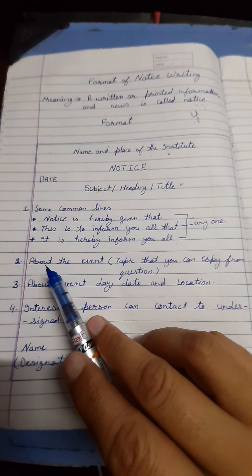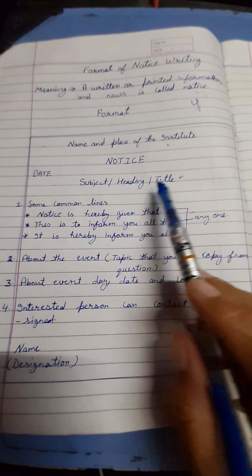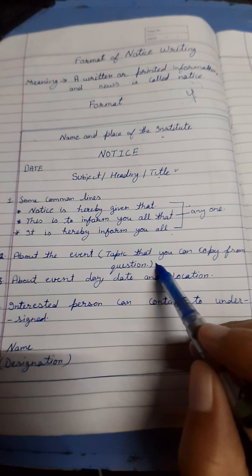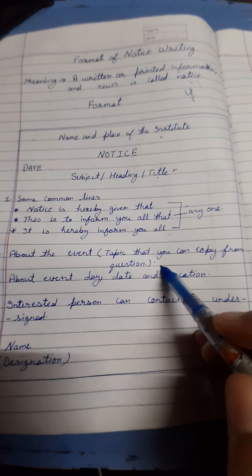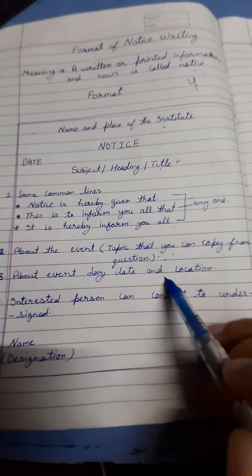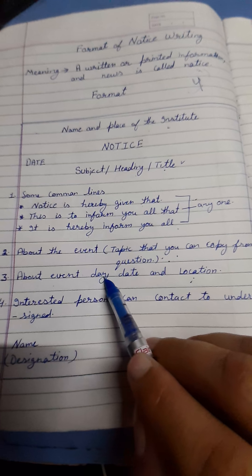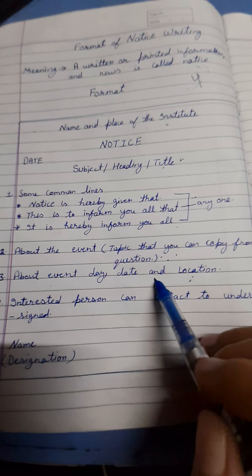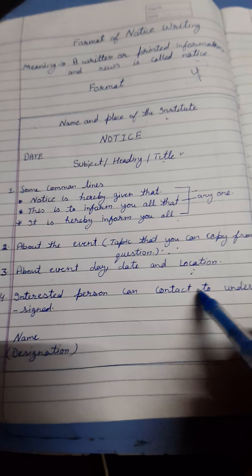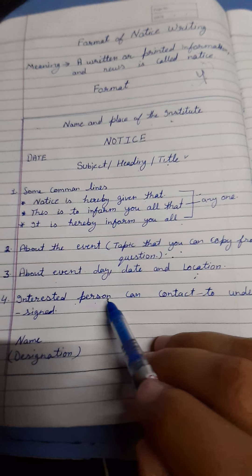In the second line, we write about the event — what kind of event we are writing the notice for. You can take information directly from the question. In the third line, we write about the event date, day, and location — where the event is going to take place. These details should be added in the third line.